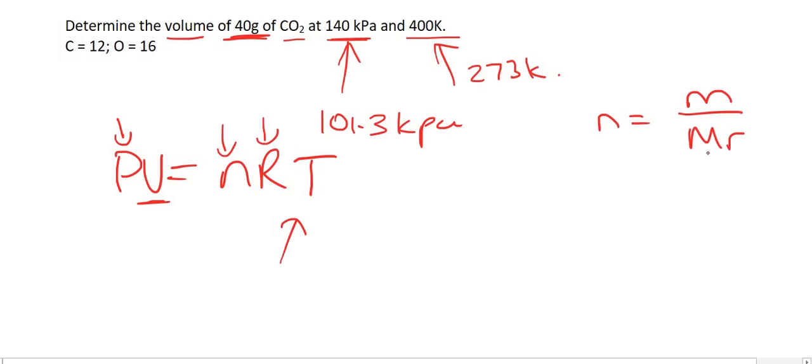So, let's work out the number of moles. To do that, you use m over MR. Now, they have given us the mass as 40. The MR is from your periodic table, but I have found the values over here. And so, carbon is 12. And then, there is two oxygens. So, it is plus 16 plus 16. And that is going to give us 44. And so, by working out the moles, we will get an answer of 0.91 moles.